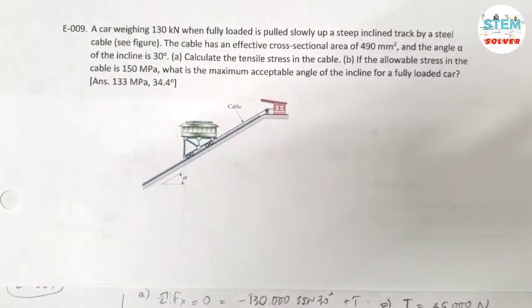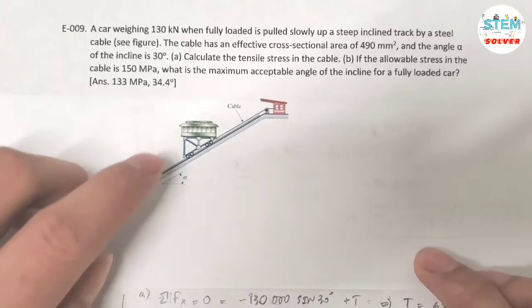A car weighing 130 kN when fully loaded is pulled slowly up a steep inclined track by a steel cable. See the figure. The cable has an effective cross-sectional area of 490 mm² and the angle alpha of the incline is 30 degrees. Part A: calculate the tensile stress in the cable. Part B: if the allowable stress in the cable is 150 MPa, what is the maximum acceptable angle of the incline for a fully loaded car? Okay, so first of all let's draw a free body diagram.